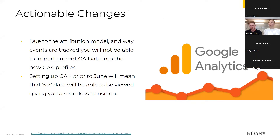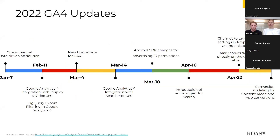There are important changes for advertisers due to the attribution model and event tracking: you will not be able to import current Universal Analytics data into new GA4 profiles. Setting up GA4 prior to June will mean year-on-year data can be viewed, giving you a seamless transition.